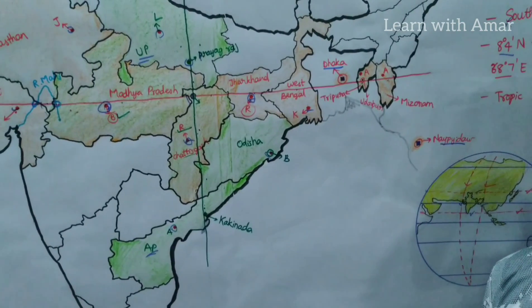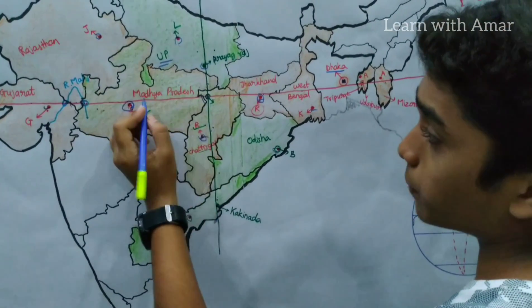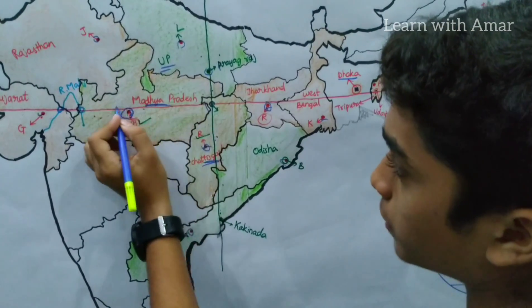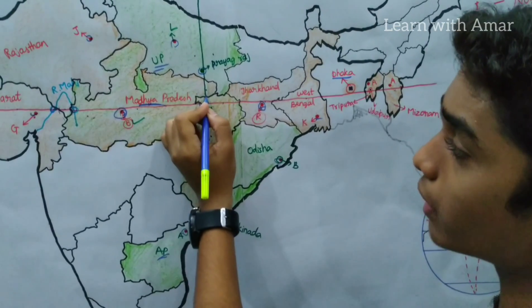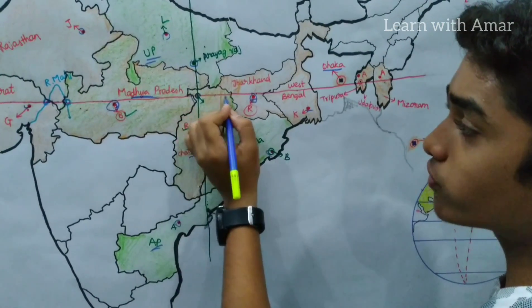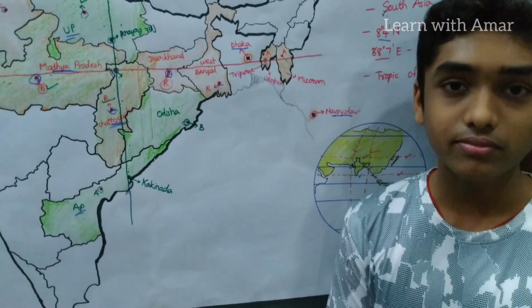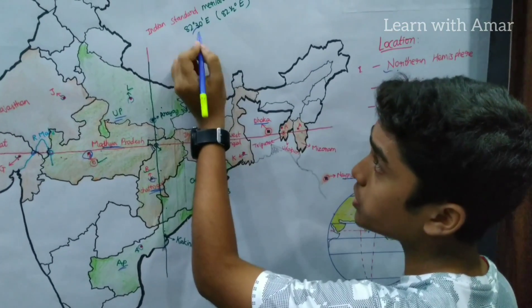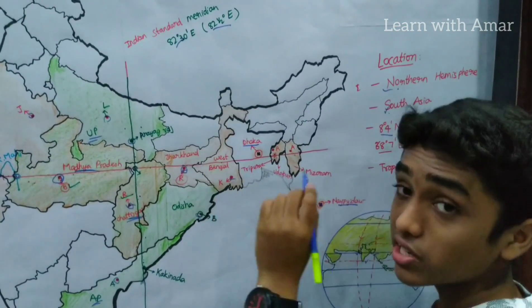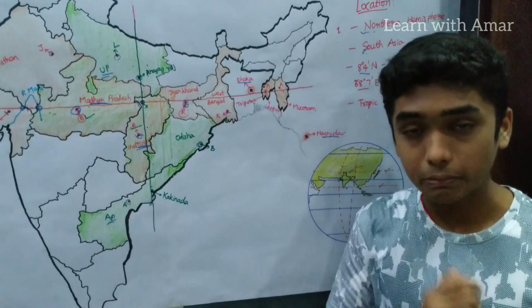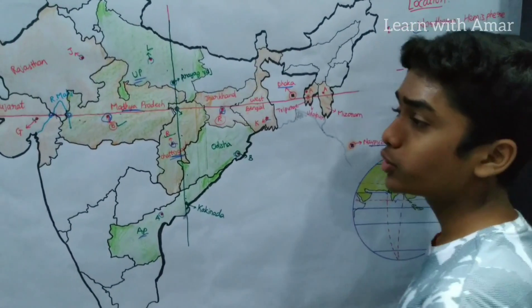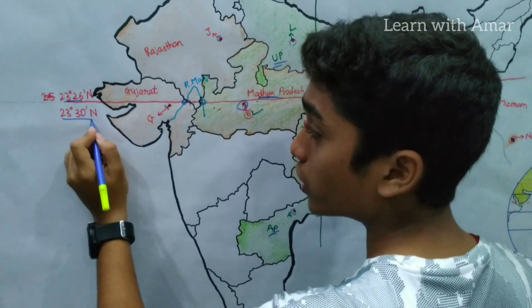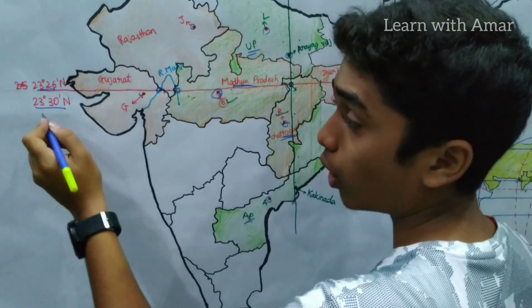In which states are both these lines found? Both the Tropic of Cancer and the Indian Standard Meridian are found in Madhya Pradesh as well as Chhattisgarh. What is the longitude of the Indian Standard Meridian? The Indian Standard Meridian is 82 degrees 30 minutes east longitude, also called 82 and a half degrees east longitude. What is the latitude of the Tropic of Cancer? The latitude of the Tropic of Cancer is 23 degrees 26 minutes, approximately taken as 23 degrees 30 minutes north latitude, or 23 and a half degrees.